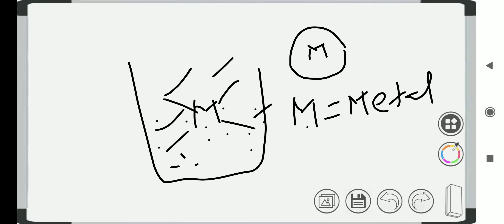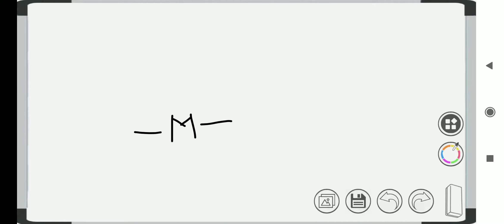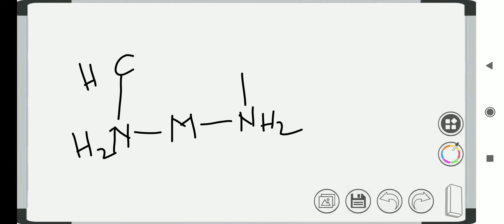An important example of a chelating agent is 1,2-diaminoethane, which is able to form two or more coordinate covalent bonds with a metal ion. Imagine we have the metal and we have diaminoethane making the bond with it — this is the favorable interaction. This chelating agent favors the solubilized form of the molecule. Due to these favorable conditions, it can be used in therapy.